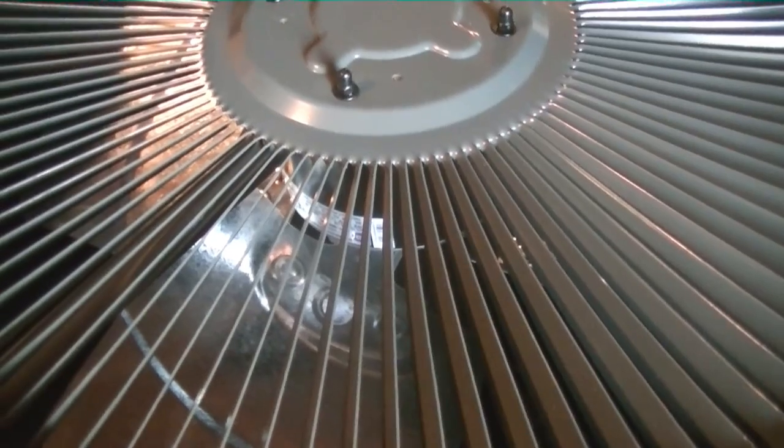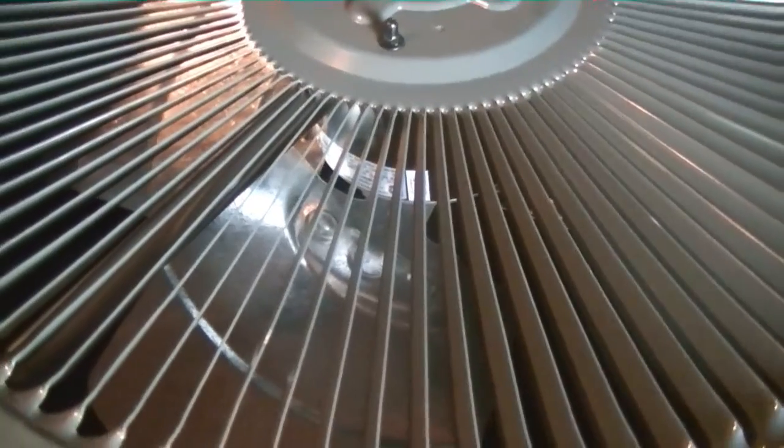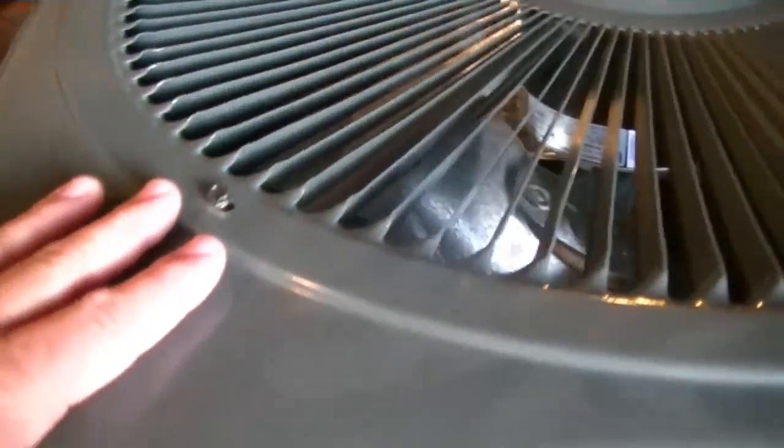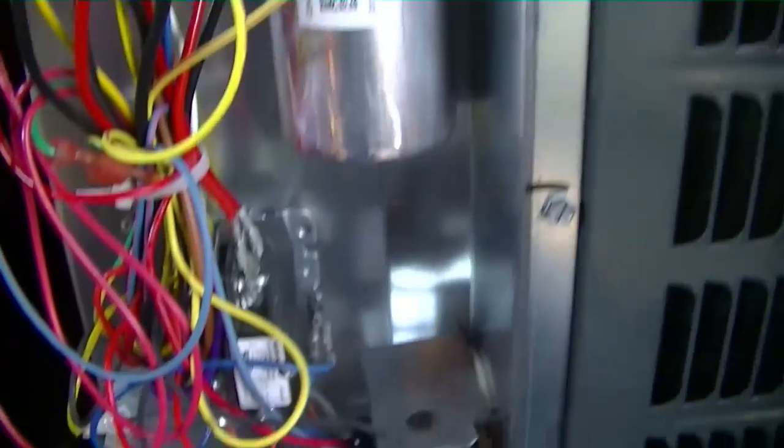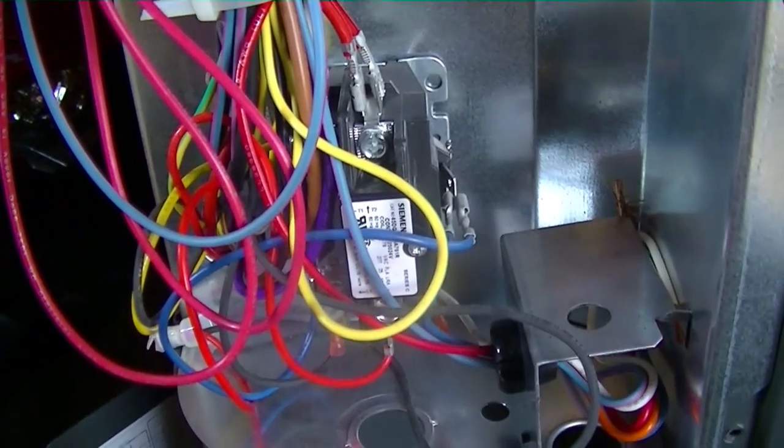The first motor we'll discuss is the outdoor fan motor. As you can see, there's a conduit here. The wiring for the outdoor fan motor passes through that conduit, goes down the back of this control and through the bottom. And in that conduit we'll have three wires.